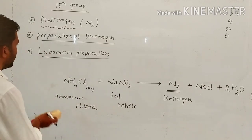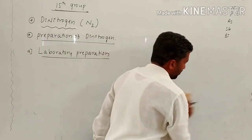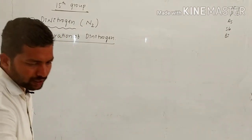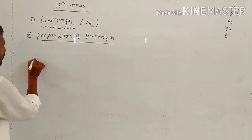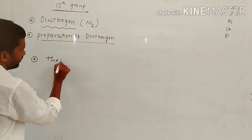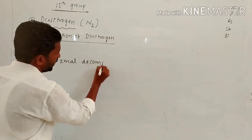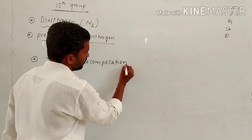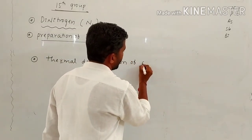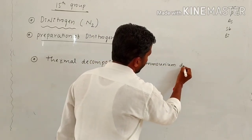In the second preparation, we have the laboratory preparation — there are three laboratory preparations in total. The second preparation is the thermal decomposition of ammonium dichromate.